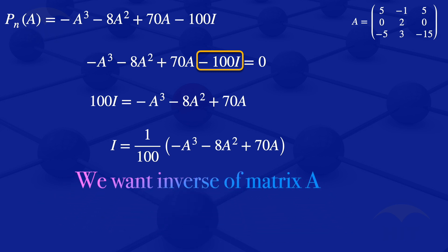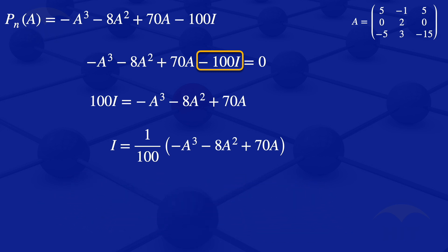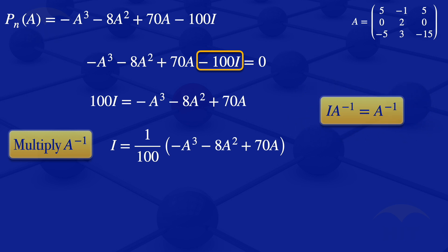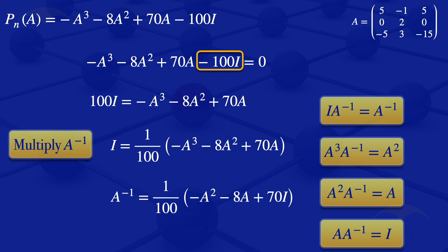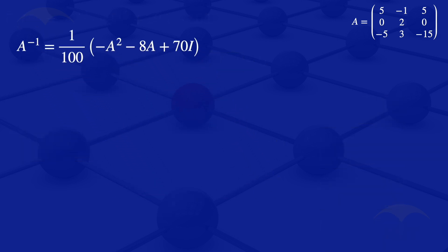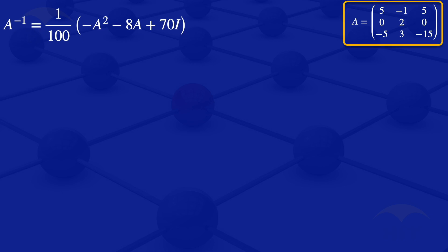We want A inverse, so we multiply throughout by A inverse. The identity matrix times A inverse gives A inverse. A cubed times A inverse gives A squared. A squared times A inverse gives A. A times A inverse gives the identity matrix. So our equation gives A inverse equals 1 over 100 multiplied by minus A squared minus 8A plus 70I. Our matrix A is the 3 by 3 with elements 5, minus 1, 5, 0, 2, 0, minus 5, 3, minus 15.